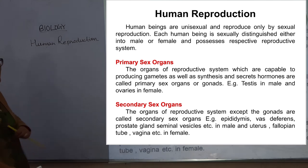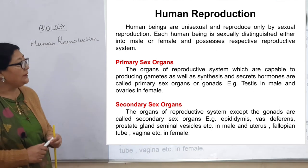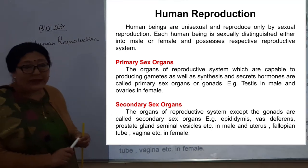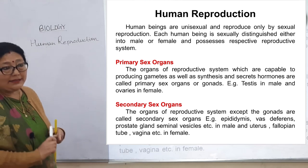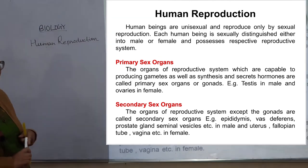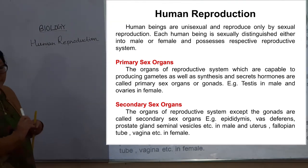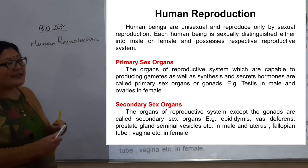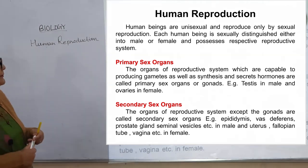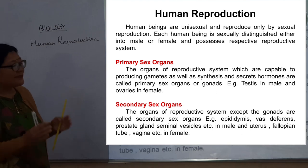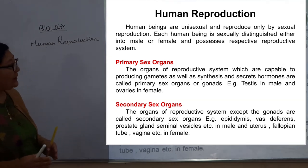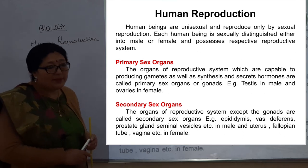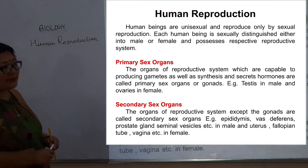Human beings are unisexual. Unisexual organisms reproduce by sexual reproduction. Each human being is sexually distinguished either into male or female and possesses a respective reproductive system.